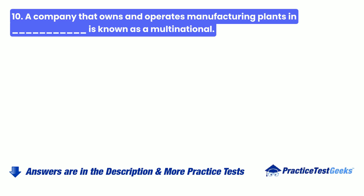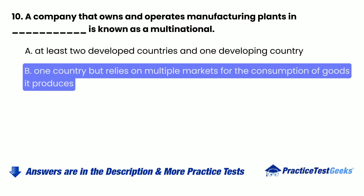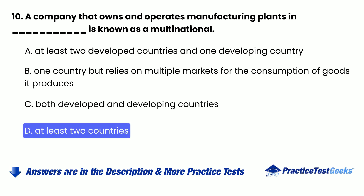Question 10: A company that owns and operates manufacturing plants in blank is known as a multinational — A. At least two developed countries and one developing country, B. One country but relies on multiple markets for the consumption of goods it produces, C. Both developed and developing countries, D. At least two countries.